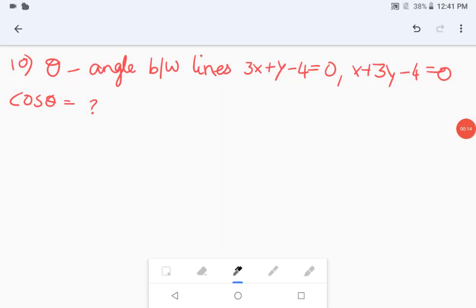So the question says, the 10th question, theta is the angle between the lines 3x plus y minus 4 is equal to 0 and x plus 3y minus 4 is equal to 0. Then we have to find the cos theta for this.